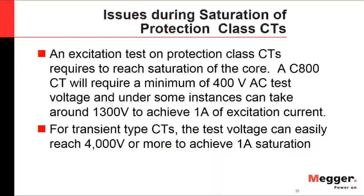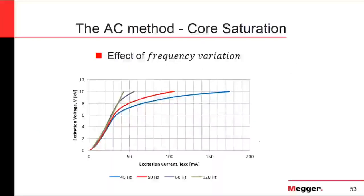If you are in the field with a typical instrument providing 2000 V AC output and 1 A, and that is not enough to reach saturation, you will not be able to obtain the saturation curve. One approach is to change the test frequency: as you lower the frequency, the voltage needed to reach saturation decreases. The saturation curve at 60 Hz requires more voltage than at 50 Hz, which in turn requires more than at 45 Hz.